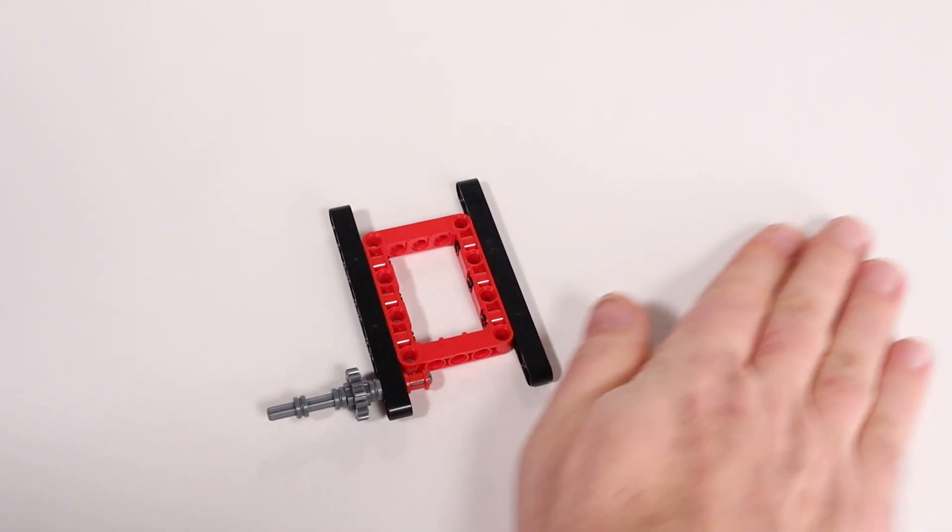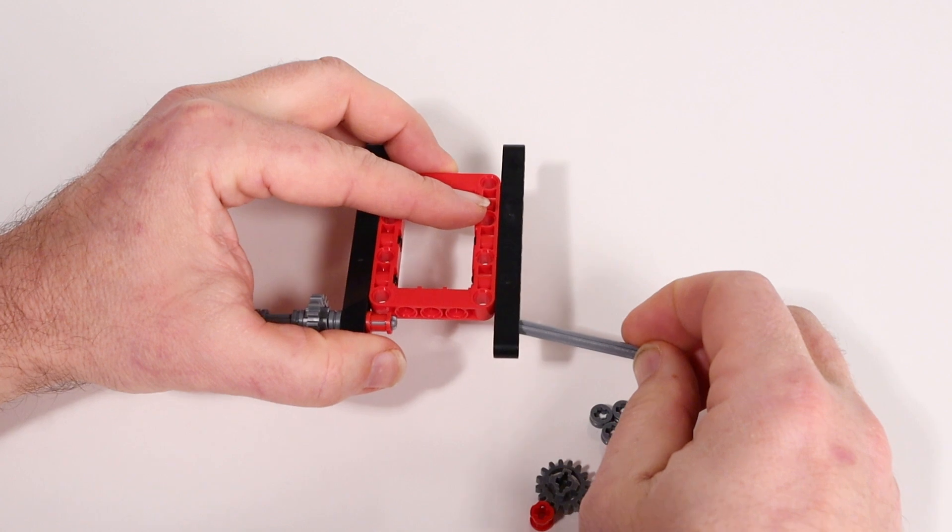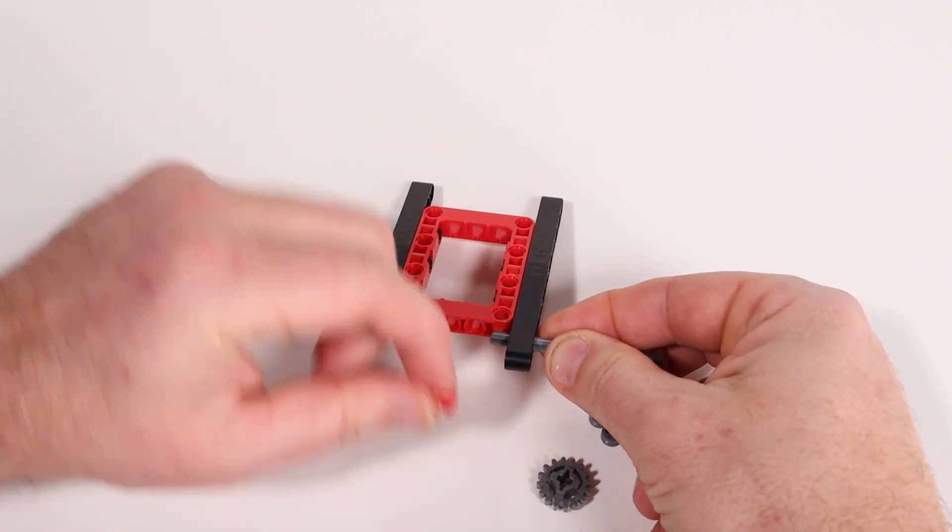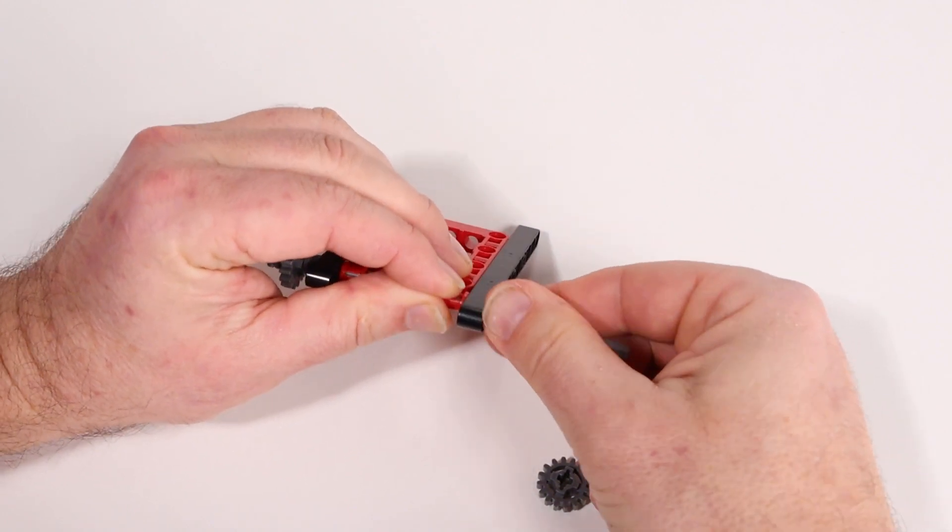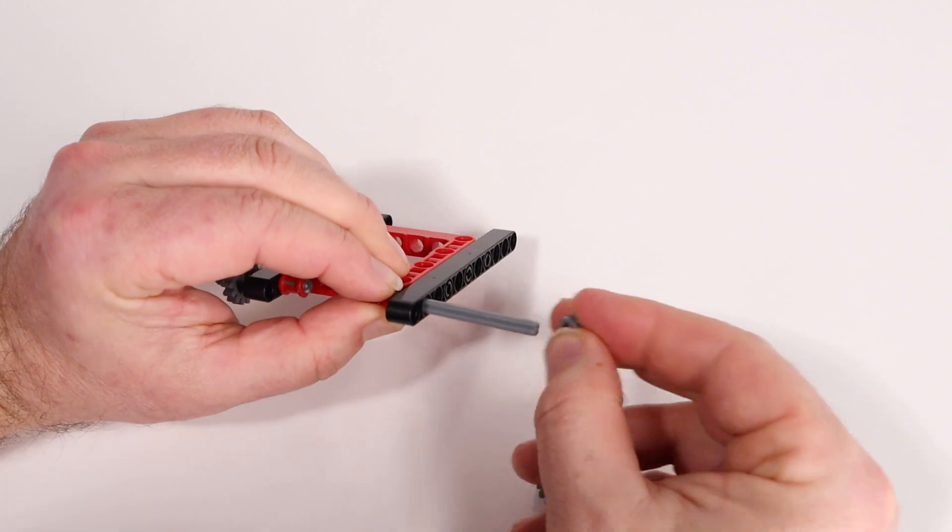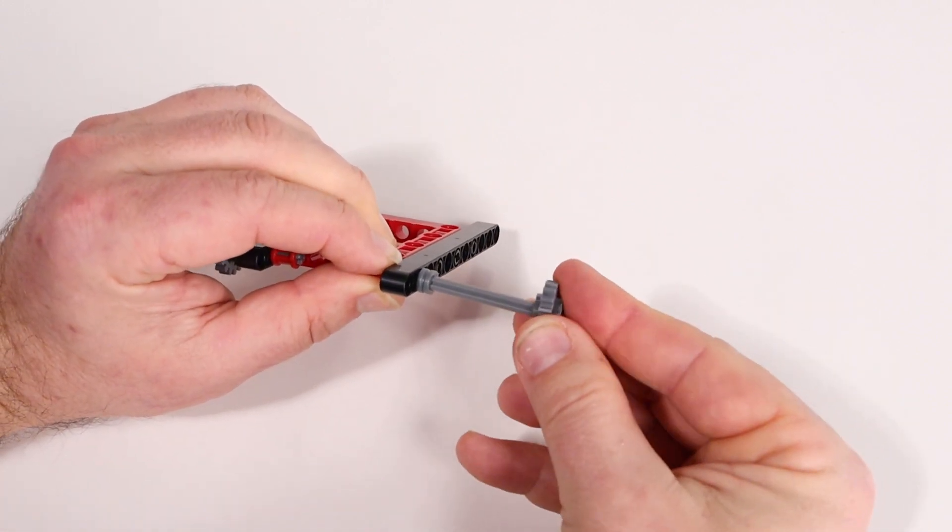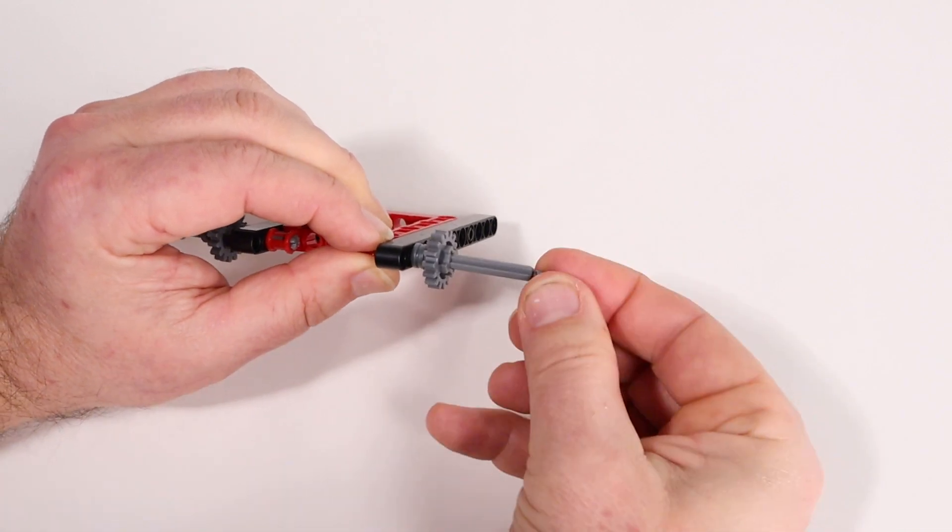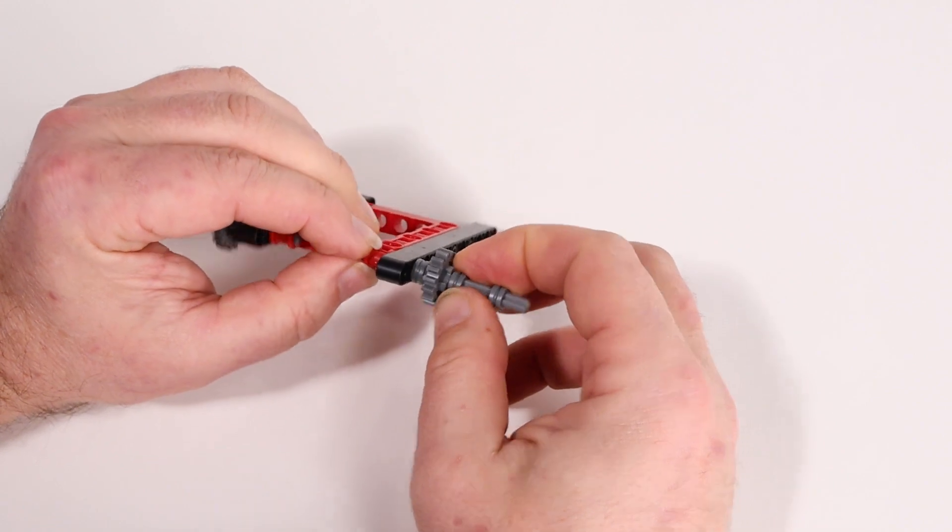Now we'll go on to the second one. Grab another set of the components and slide the axle in through the second hole from the end. Add a full size red bushing. Then on the outside a short gray half bushing. A small gear. Another half bushing. And then finally a loose half bushing just about halfway down.